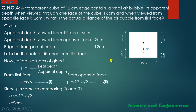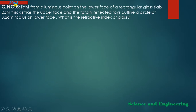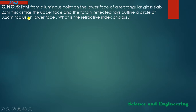Now let's go to another important conceptual question. Question: A light ray from a luminous point on the lower face of a rectangular glass slab of 2 cm thickness strikes the upper face and the totally internally reflected ray outlines a circle on the lower face. What is the refractive index of the glass?